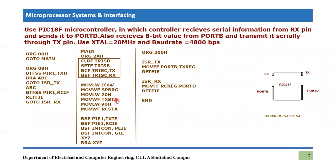Next, we move 0x90 into the working register and send it to RCSTA, which enables the serial port and configures asynchronous serial reception. This section completes the serial port configuration.